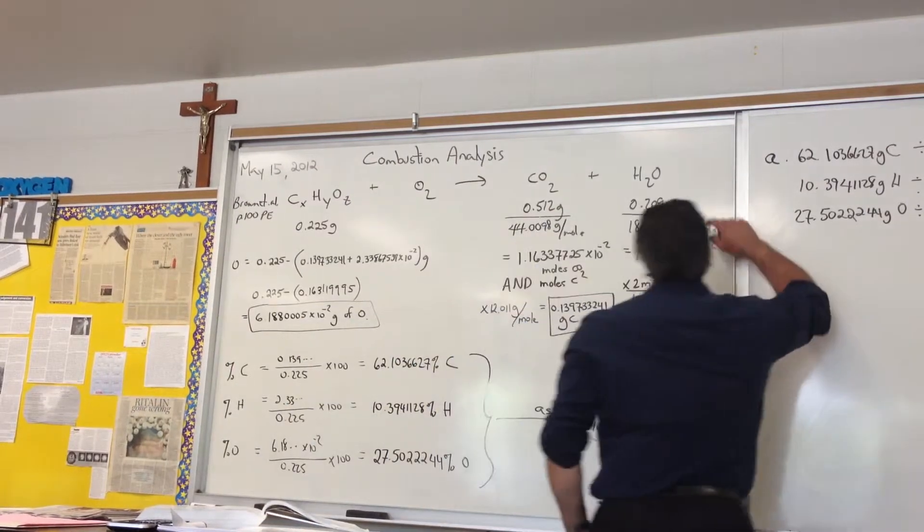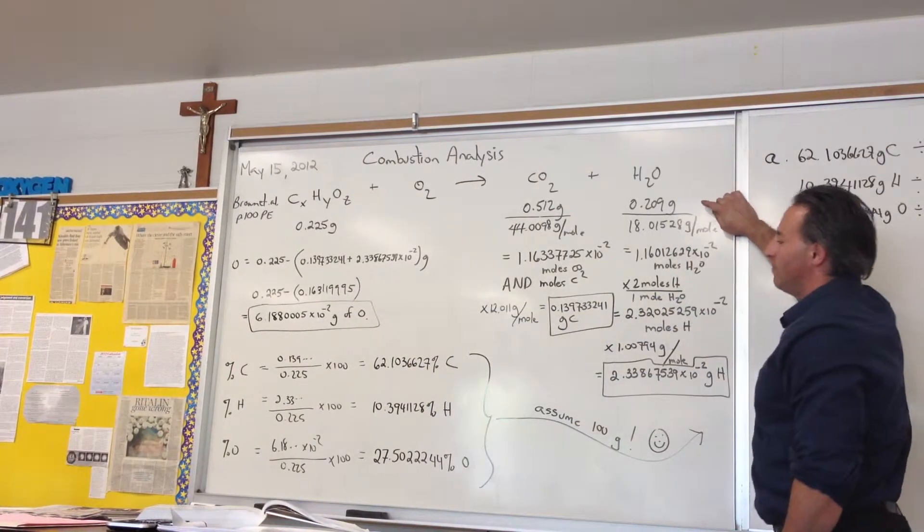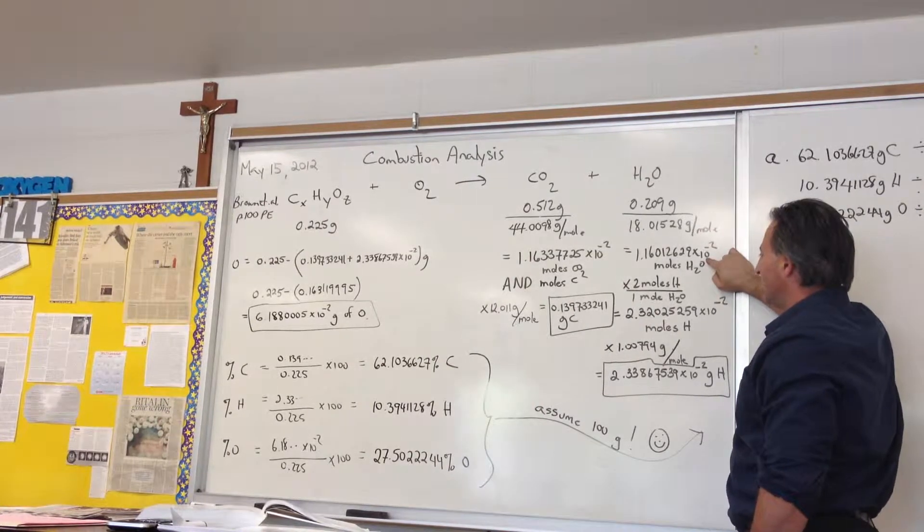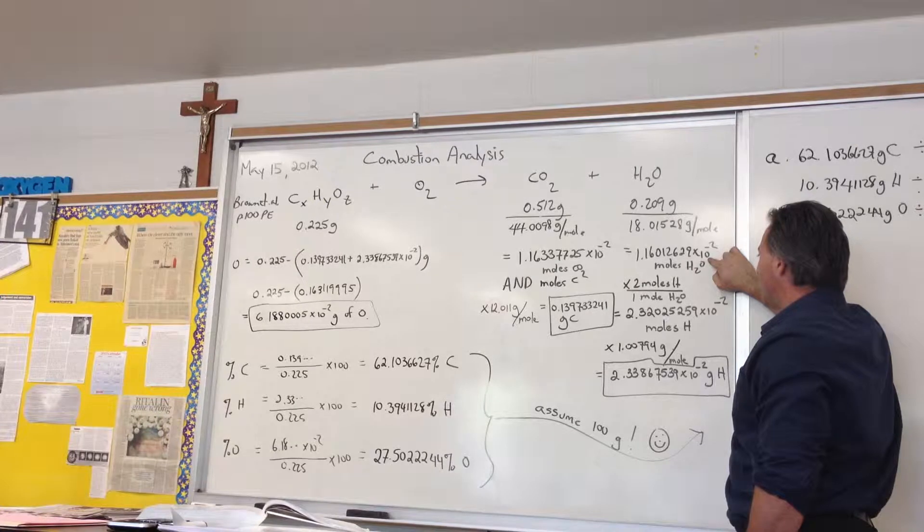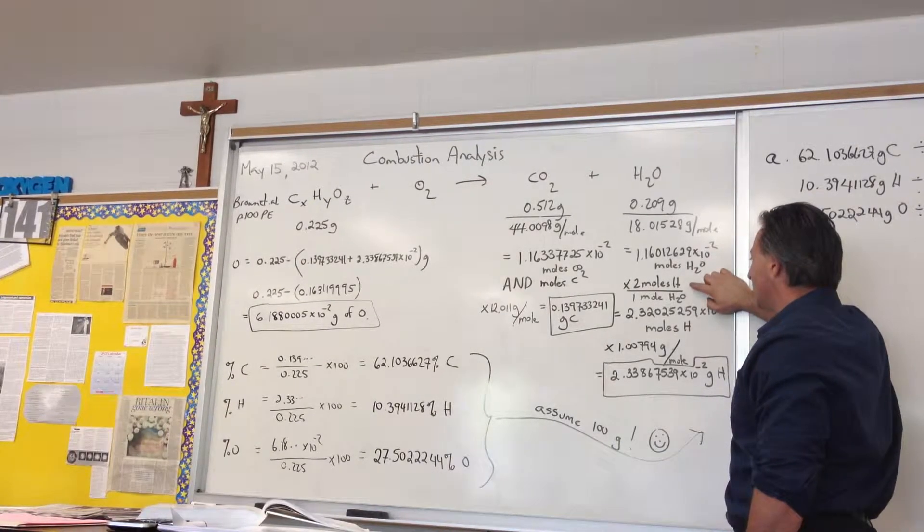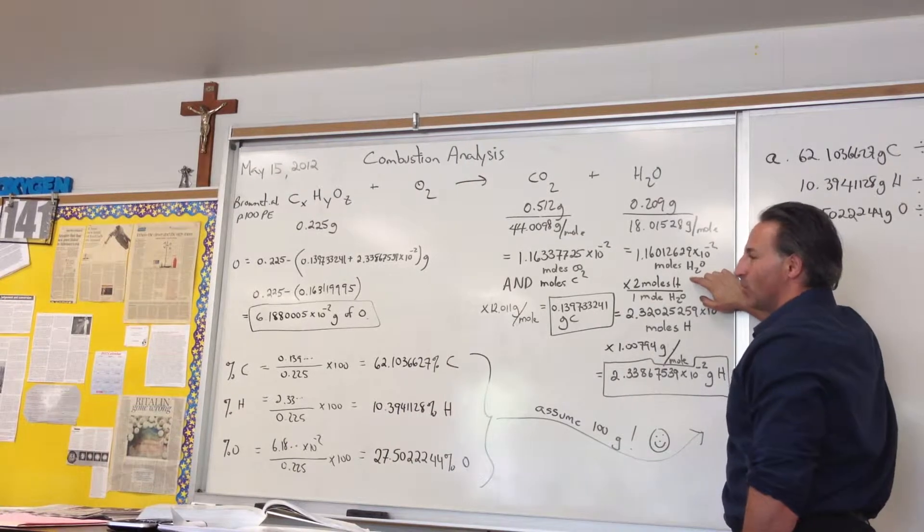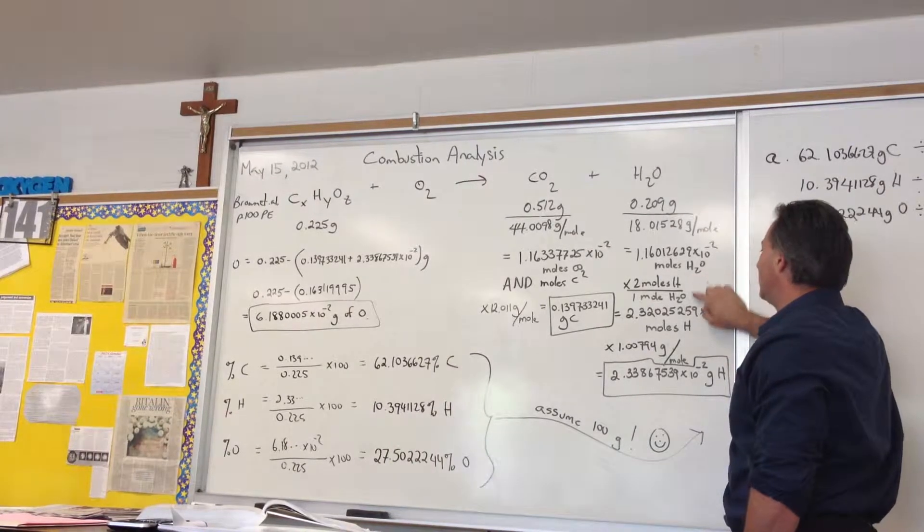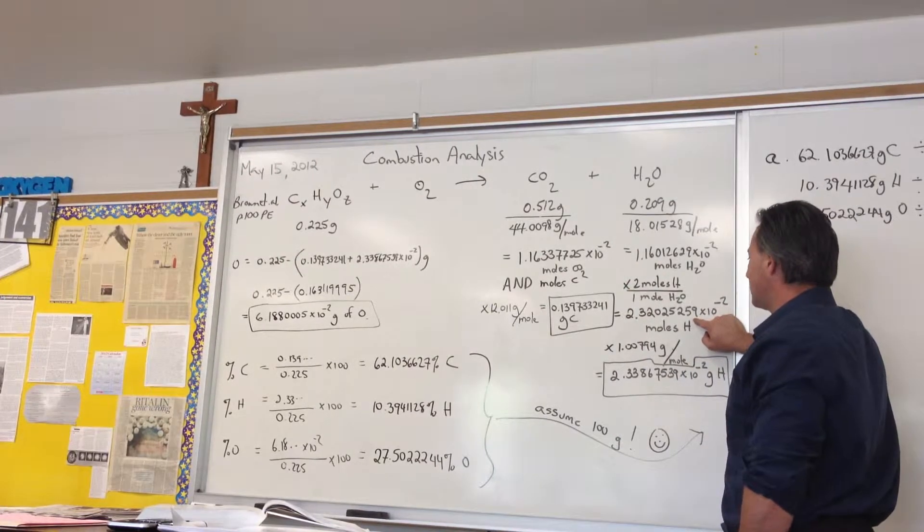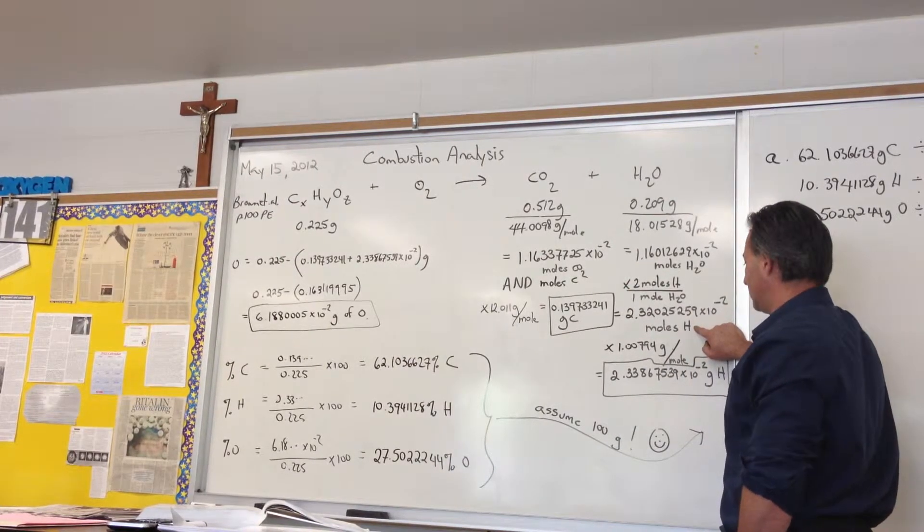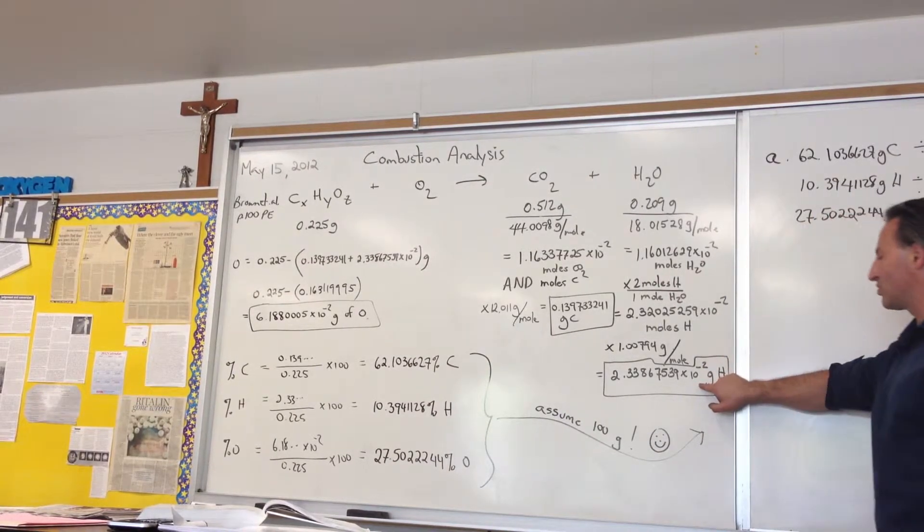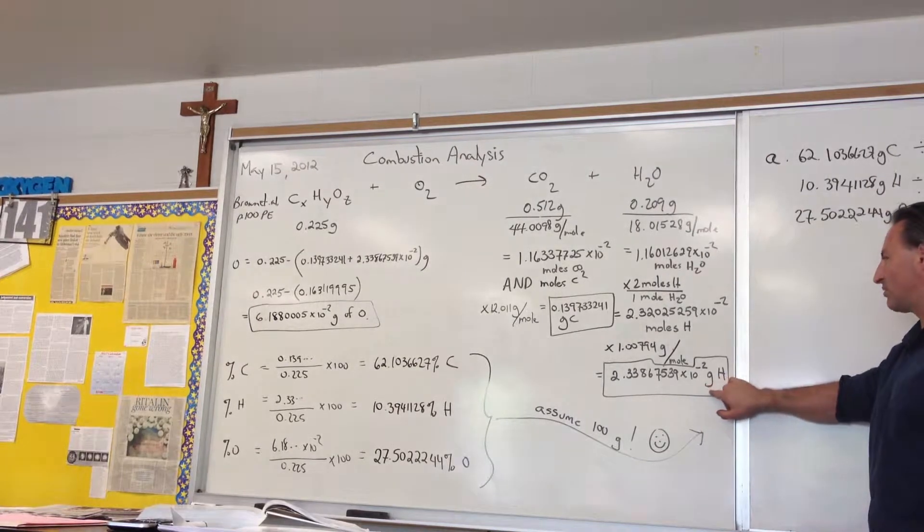We do the same with water. Dividing 0.209 grams by the molar mass of water gives 1.16 × 10⁻² moles of water. Since water is H2O, there are twice as many moles of hydrogen as moles of water. Multiplying by 2 gives 2.32 × 10⁻² moles of hydrogen. Multiplying by the molar mass of hydrogen gives 2.33 × 10⁻² grams of hydrogen.